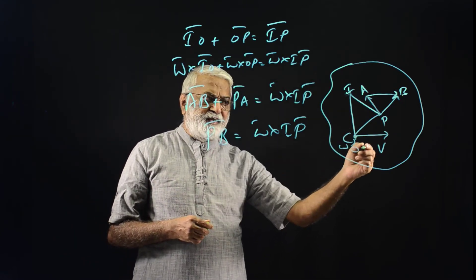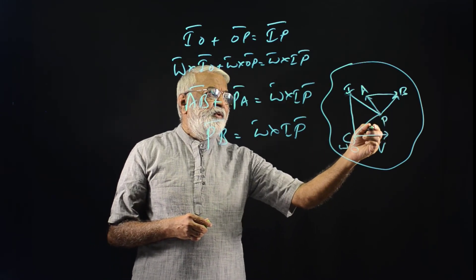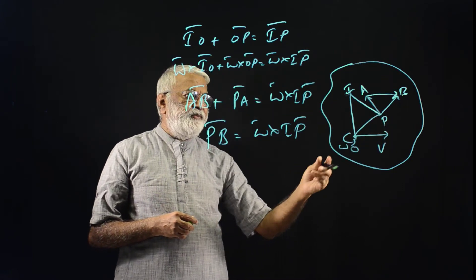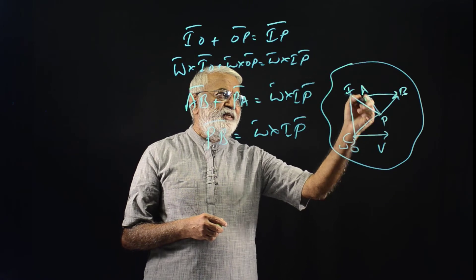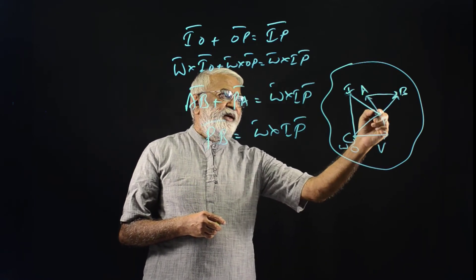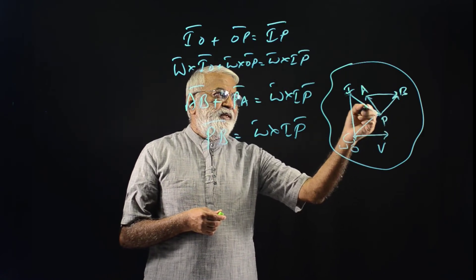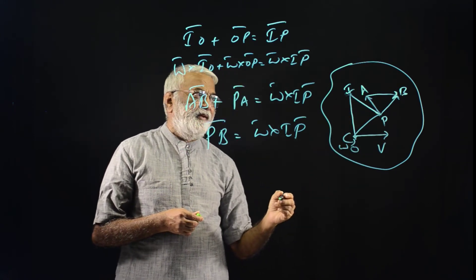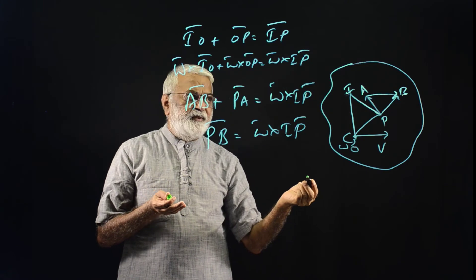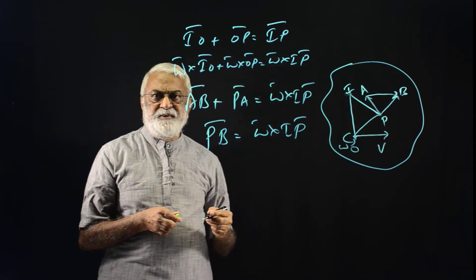To summarize: this object is in combined translation plus rotation. Rotation is about an axis through O at Omega, and O is translating at V. Velocity of point P relative to O is OP times Omega, represented by PA perpendicular to OP. Adding the velocity of O, we get PB — the velocity of P relative to the ground observer. We have drawn a line perpendicular to PB, which intersects the line perpendicular to V at I. The velocity of P equals IP times Omega, so instead of adding two vectors, we get PB directly as Omega times IP, perpendicular to IP.